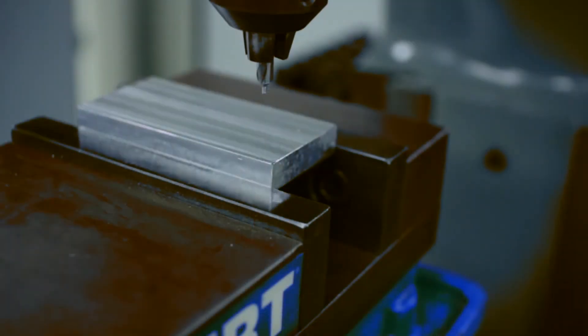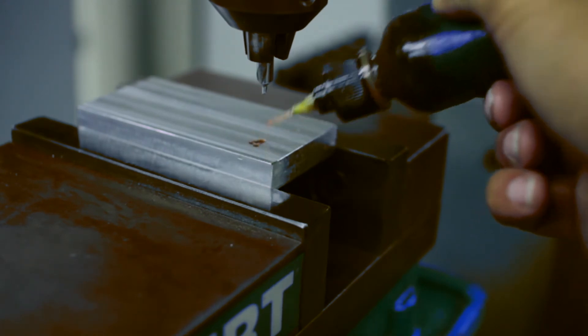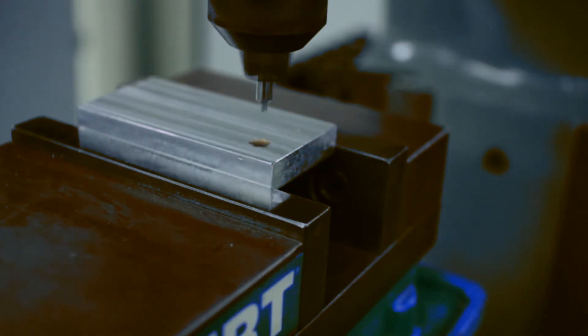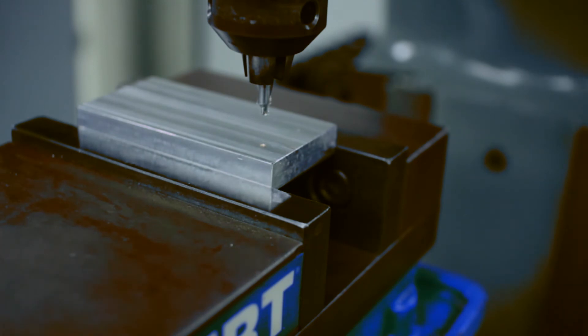We have loaded the center drill into the Jacobs chuck. Add oil to the estimated drilling location. Turn on the machine and perform a light peck. Repeat this step for all of the hole features.